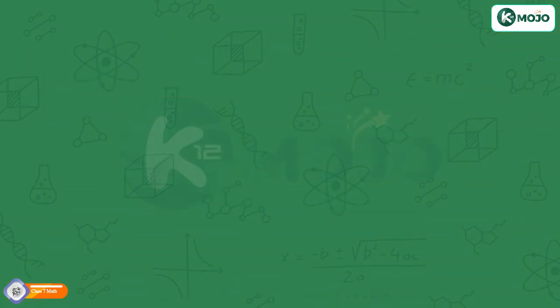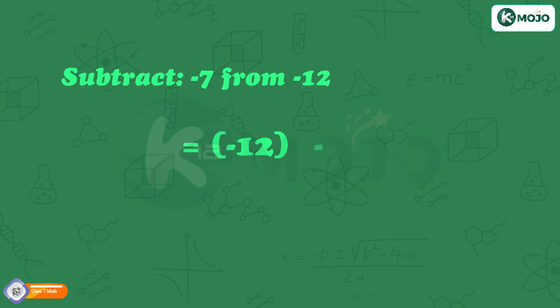Similarly, we can subtract integers. Subtract minus 7 from minus 12. Minus 12 minus minus 7 is equal to minus 12 plus 7, which equals minus 5.